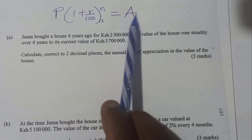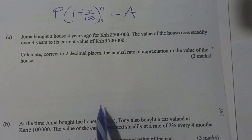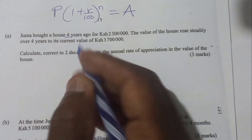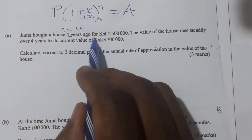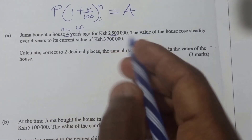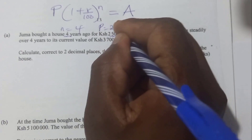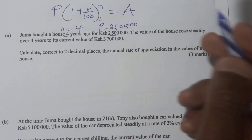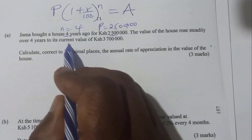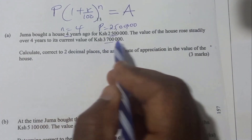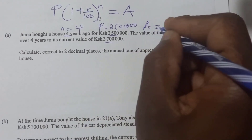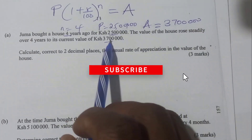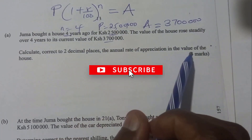A is the amount after appreciation. In this case, the house was bought 4 years ago, so the period N equals 4. It was bought at 2.5 million, so P is 2.5 million shillings. The current value after appreciation — so A — will be 3.7 million. We need to substitute this and we'll be able to calculate the rate of appreciation.